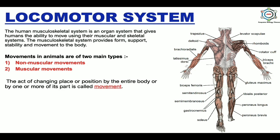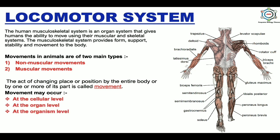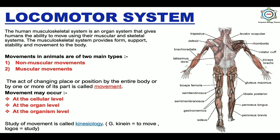Movement is the act of changing place or position by the entire body or by one or more of its parts. Movement may occur at the cellular level — for instance, cytoplasmic streaming and swimming of gametes; at the organ level — like heartbeat and rotation of fibers; or at the organism level — like swimming of fishes, flying of birds, and walking of humans. The study of movement is called kinesiology. In Greek, kinesis means to move and logos means study. So kinesiology is the branch of science that deals with the study of movement of organisms.